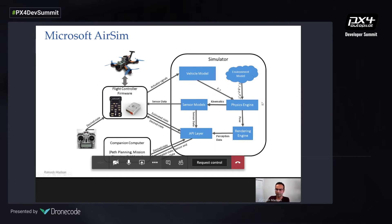The rendering engine takes the pose predicted by the physics engine and uses it to move the drone mesh in Unreal Engine or Unity. After that, you can get camera data or LiDAR data through the API layer, and from there you can do higher-level autonomy, reinforcement learning, or imitation learning-based research — whatever you're interested in.